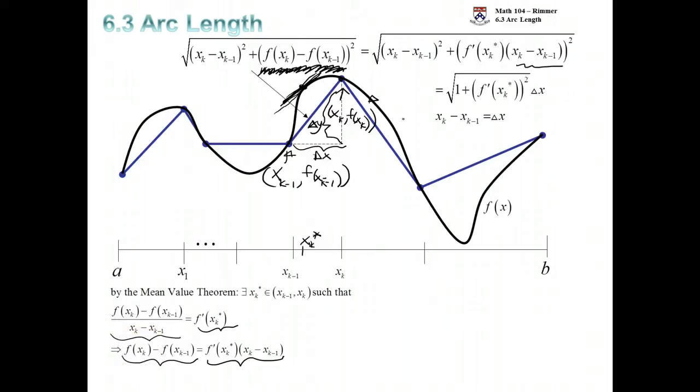If we want the arc length, we can add up a bunch of these. In this particular example, we have 6 of them. n is equal to 6 in this example. But in order to get accuracy, we're going to have to take our interval and break it into more sub intervals. Let n go to infinity. As the number of sub intervals goes to infinity, then the line segment addition will be closer and closer to the actual arc length.